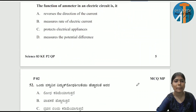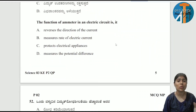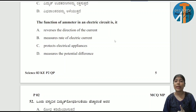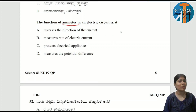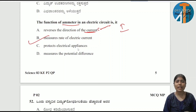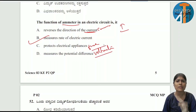The function of an ammeter in an electric circuit — device-related questions definitely appear in the exam. Ammeter is used to measure electric current. It does not reverse direction — that is the commutator. Option B is the correct answer: measures the rate of electric current. It does not protect electrical appliances — that is fuse. Measuring potential difference is the voltmeter.